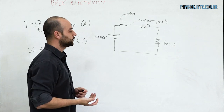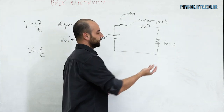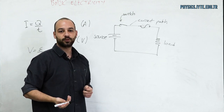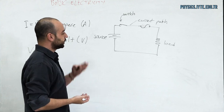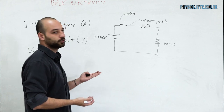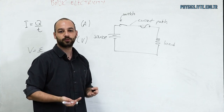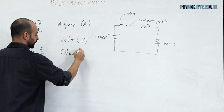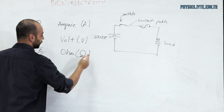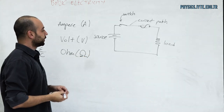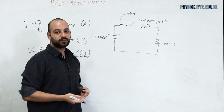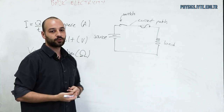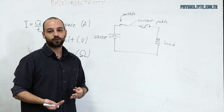The load can be a resistor, an electrical device, or a more complex circuit. Resistance is the opposition to current. We use resistance in our circuits to limit or control current flow. The unit is ohm, represented by the symbol omega. If there is near-zero resistance in a circuit, we call that a short circuit.